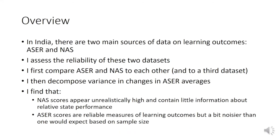In India, there are two main sources of data on learning outcomes: the ACER survey and the NAS survey. The goal of this analysis is to assess the reliability of those two data sets, and I do this in two ways. First, I compare ACER and NAS to each other as well as to a third data set. Second, I decompose variance in changes in ACER scores over time. Overall, NAS scores appear unrealistically high and contain little information about relative state performance. On the other hand, ACER scores are reliable measures of learning outcomes, but just a tad bit noisier than one would expect based on sample size.